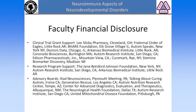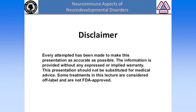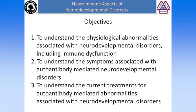These are my disclosures regarding support for our clinical trials, research program, and advisory boards. Everything I say here is made to be as accurate as possible, although there's no implied warranty. Some of the treatments I talk about today are not FDA approved, so most of them are used off-label. Our objectives are: to understand the physiological abnormalities associated with neurodevelopmental disorders including immune dysfunction, to understand the symptoms associated with antibody-mediated neurodevelopmental disorders, and to understand current treatments for autoantibody-mediated abnormalities.